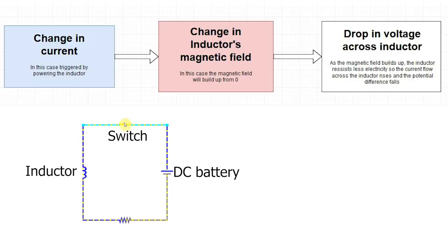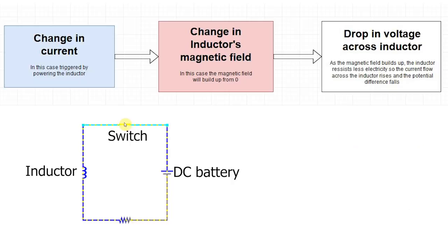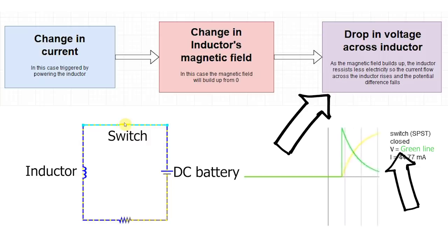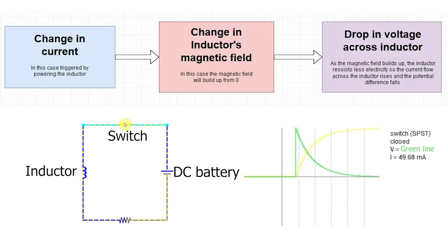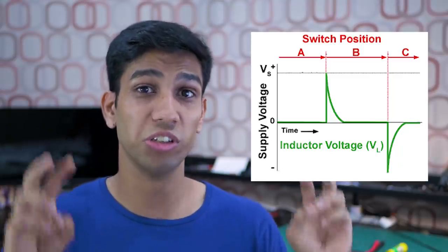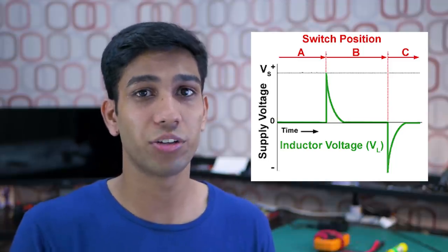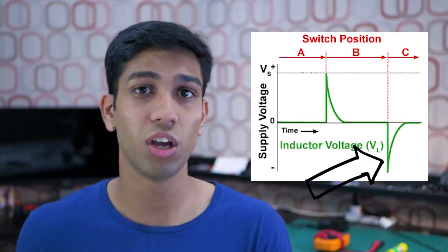Once this magnetic field slowly starts to build, the inductor lets through more current due to a lower back EMF. You can think of the back EMF sort of like resistance. This lower back EMF leads to a lower voltage drop across the inductor, making the inductor more and more conductive. Once charging is fully done, the inductor acts like a conductor and passes electricity through normally. This process is called self-inductance. Do note that once you power off the circuit, the inductor will discharge its magnetic stored energy back into the circuit. This release in voltage is opposite in polarity to the original inductor's voltage, so you may need to take precautions to protect your electronics against this release.